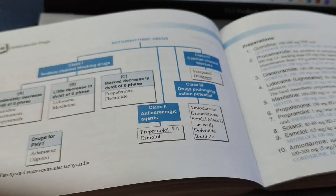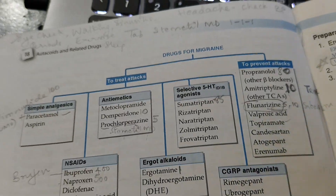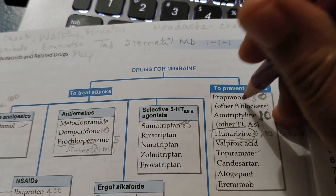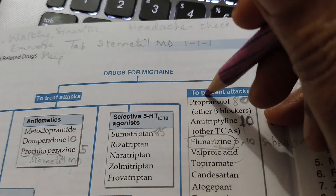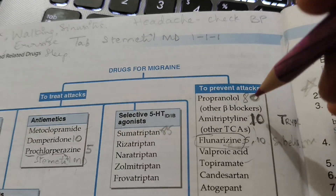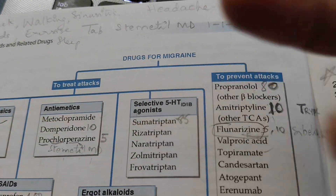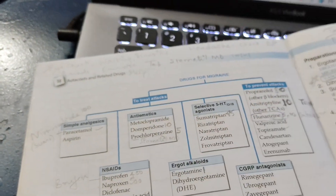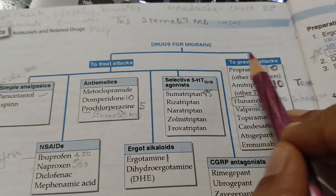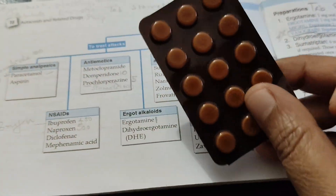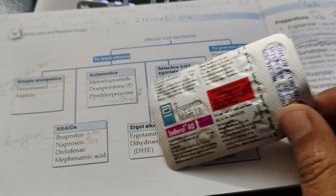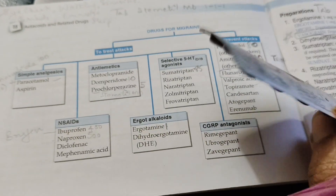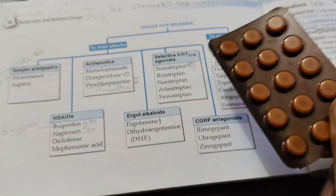Also, in migraine prophylaxis, propranolol should be there. If you are taking propranolol for any reason, it will also prevent migraine attacks. You can use propranolol or other beta blockers to prevent migraine — it is not for when you get migraine, but if you take it regularly you will not get that migraine attack. This is prevention of migraine. So why did the doctor ask you to take propranolol? For anxiety, for arrhythmia, for hypertension, hyperthyroidism, or migraine.